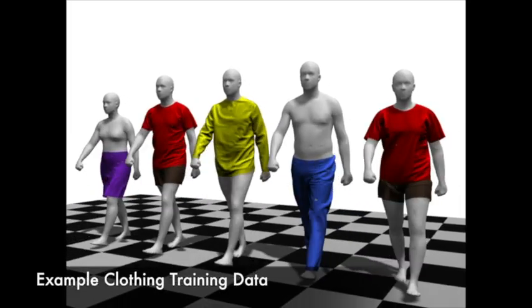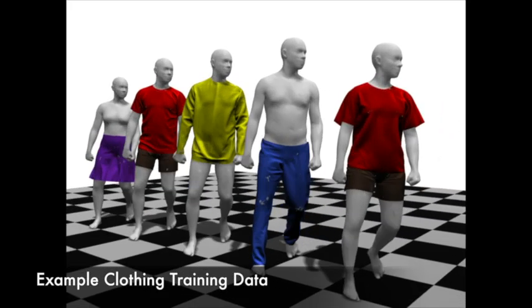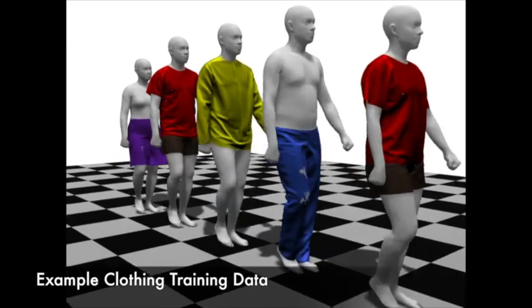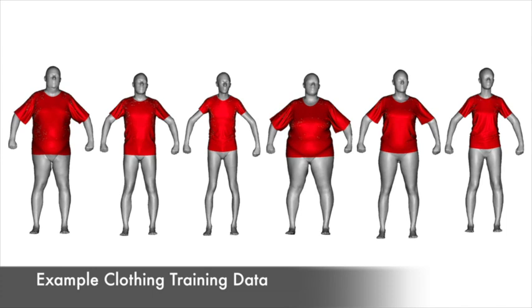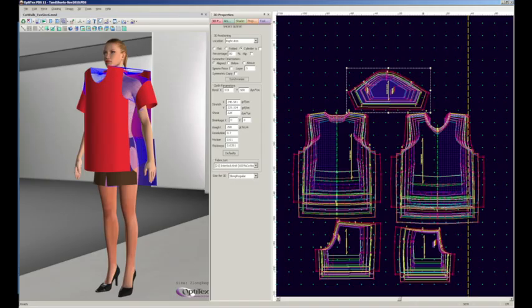We begin by generating two sets of training data for each garment. Male and female bodies are animated using motion capture data, and a wide variety of body shapes are dressed in a common pose. The training clothing is produced using Optitex, a physically-based simulation system.